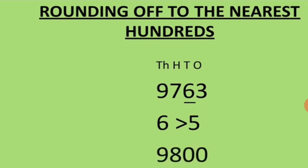Now 6 is greater than 5. When the number is equal to 5 or greater than 5, we add 1 to the place on which we are doing the round off. At the hundreds place the number is 7, so 7 plus 1 is 8. At the thousands place 9 will remain 9, and at the tens and ones place both numbers will become 0. The number to the right becomes 0, and the number to the left remains the same.